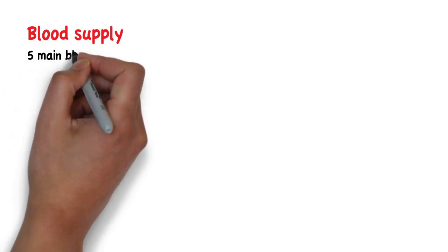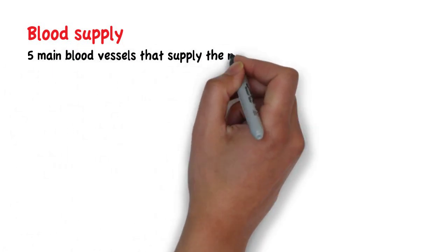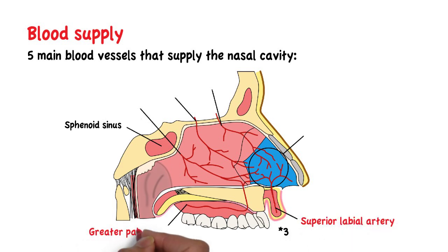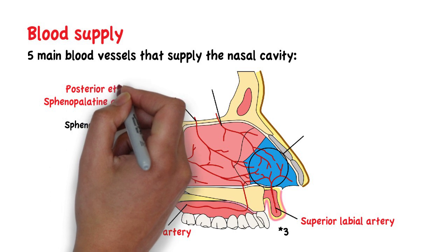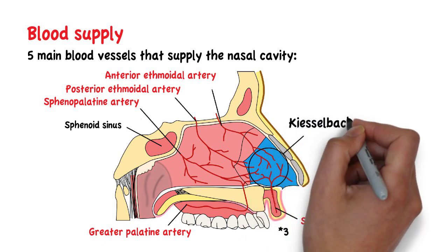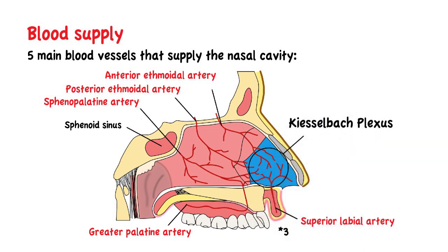As for the blood supply, there are five main blood vessels that supply the nasal cavity. These are the superior labial artery, the greater palatine artery, the sphenopalatine artery, and the anterior and posterior ethmoidal arteries. These arteries anastomose, forming the Kiesselbach plexus. This extensive blood supply is why nosebleeds can bleed a lot.